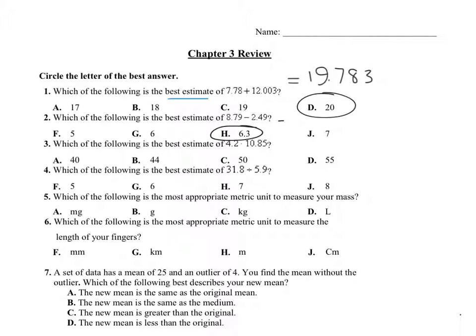And then number three, what is the best estimate? So if you calculate 4.2 times 10.85, the answer is 45.57. So which of these numbers is closest to 45.57? This one. This one's closest on the number line. So the answer is B.